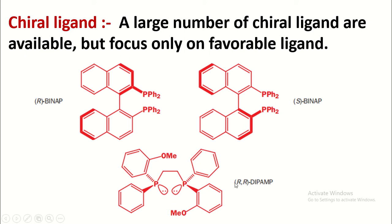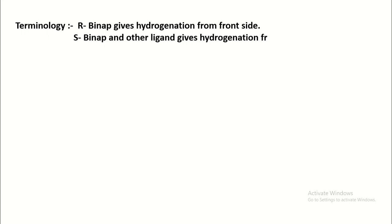The third chiral ligand is also useful for such purpose, that is called R,R-DIPAMP. Now the simple terminology is used to assign the stereochemistry of the product. If ligand R-BINAP is used, hydrogenation from front side. If ligand S-BINAP or other ligands are used, hydrogenation from the back side.